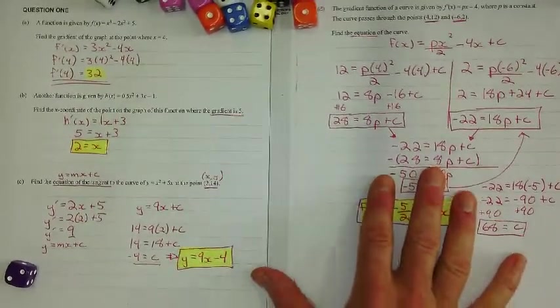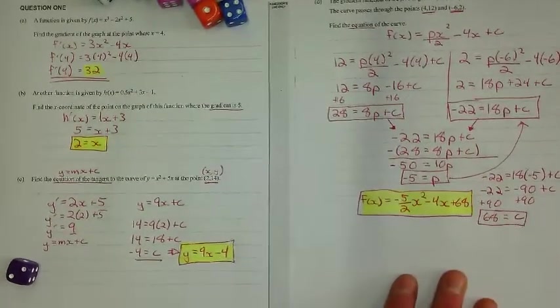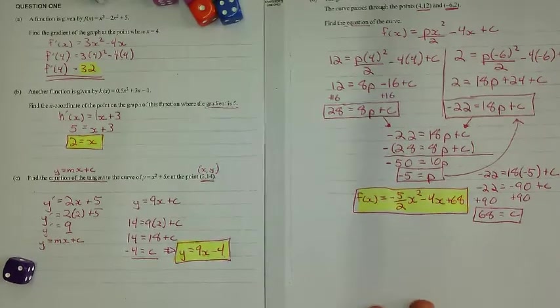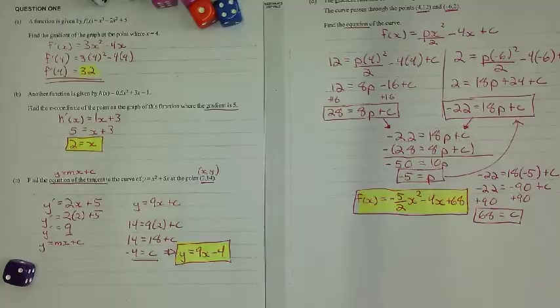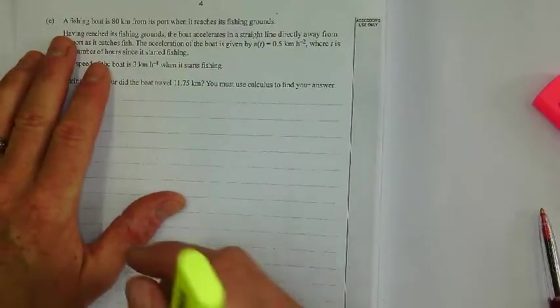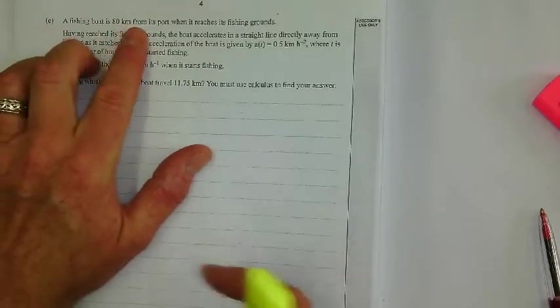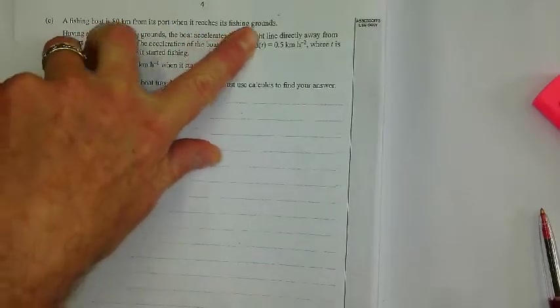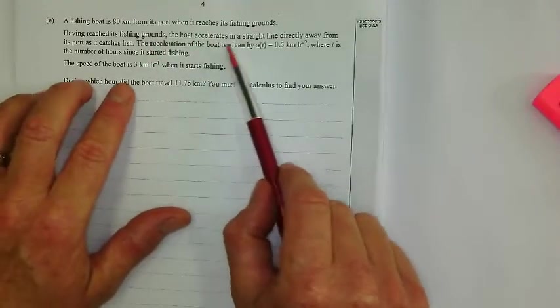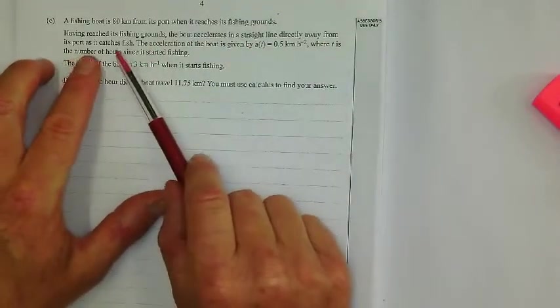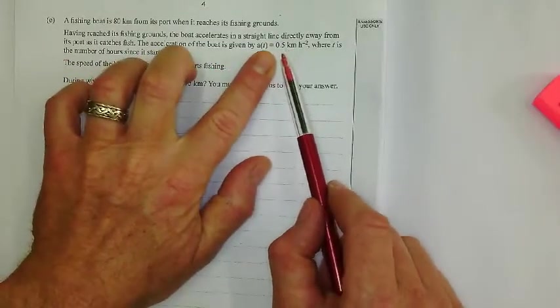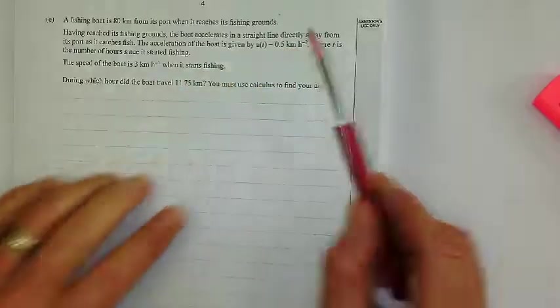All right. So here's what we've done so far. And I'm just about to get to that very last question, which is, I think, a kinematics problem. And then that's question one for this exam. All right. So check out this next one. Fishing boat is 80 kilometers from port when it reaches its fishing grounds. Having reached its fishing grounds, the acceleration is given, straight line, directly away from the port as it catches fish.